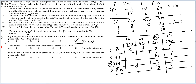Seventh question: the number of Henley shirts priced at 400. This number is not determinable from the information given, so the answer is cannot be determined.